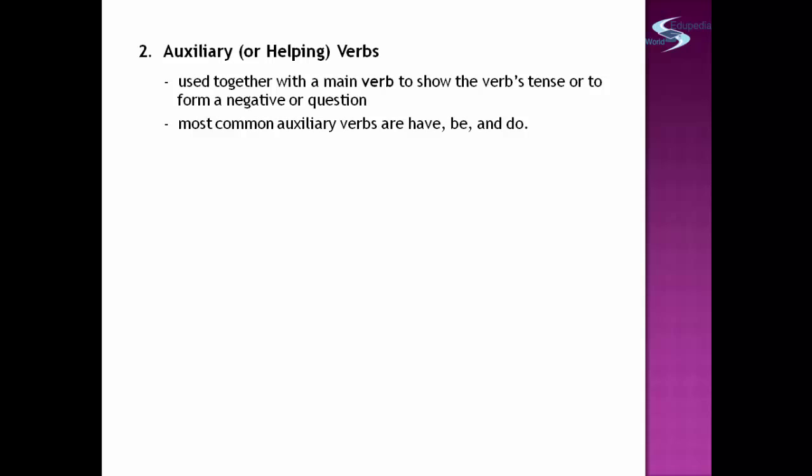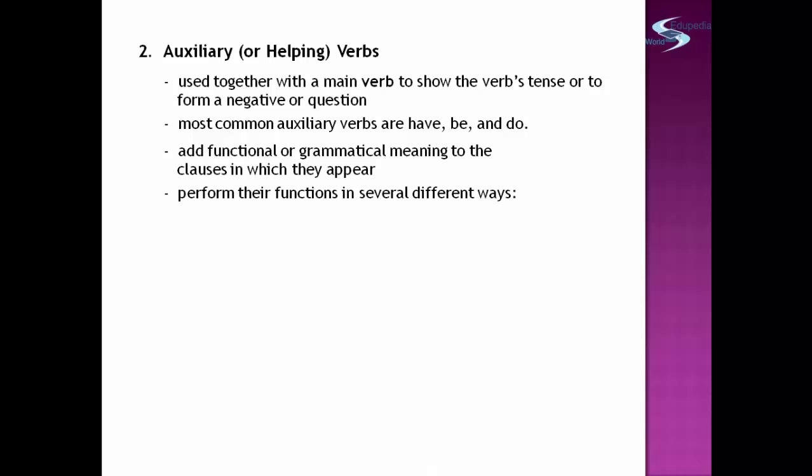The second type is auxiliary or helping verbs. These are used together with a main verb to show the verb's tense or to form a negative or question. The most common auxiliary verbs are have, be, and do — and we already have lessons on verb to have, verb to be, and verb to do. These auxiliary verbs add functional or grammatical meaning to clauses. One function is expressing tense — providing a time reference such as past, present, or future tense.